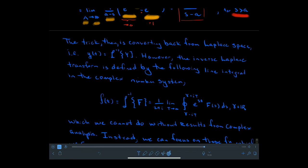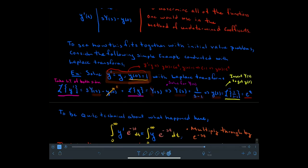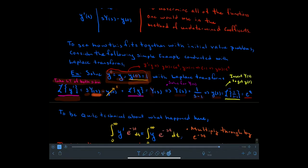Now, putting this all together, we solve the initial value problem y' equals y with y(0) equal to 1. We recognize this should be e to the t, but let's do it with Laplace transforms. We take the Laplace transform of both sides of the equation. The Laplace transform of y' is s times Y(s) minus y(0). We substitute the initial condition y(0) equals 1, and on the right-hand side the Laplace transform of little y is capital Y(s).